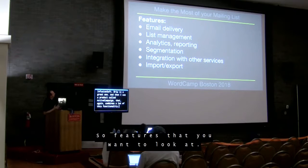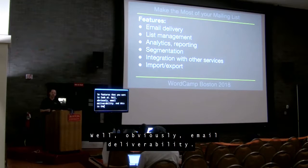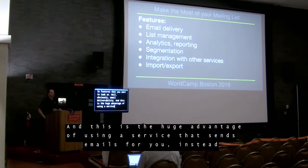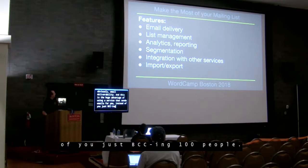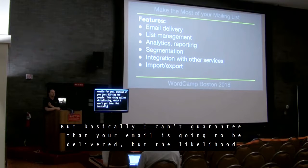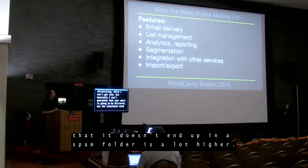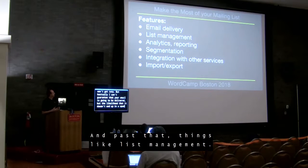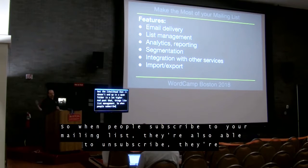Features to look at: number one is email deliverability. This is the huge advantage of using a service that sends emails for you instead of just BCC-ing 100 people — it's called whitelisting, and basically the likelihood that your email doesn't end up in a spam folder is a lot higher. And past that, things like list management — when people subscribe, they're also able to unsubscribe and update their email accounts.